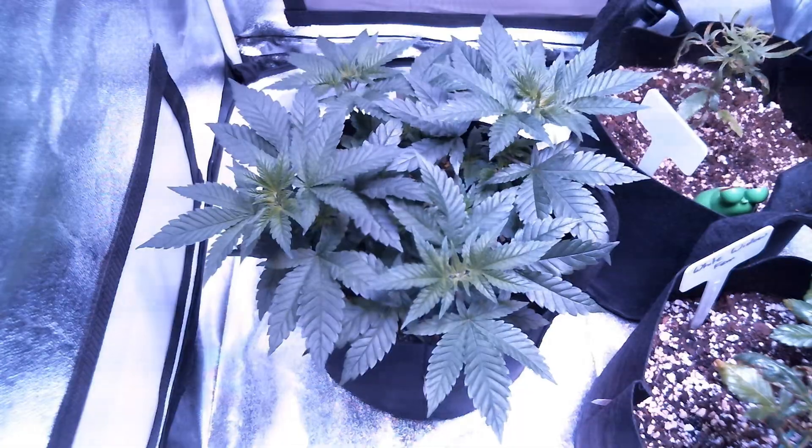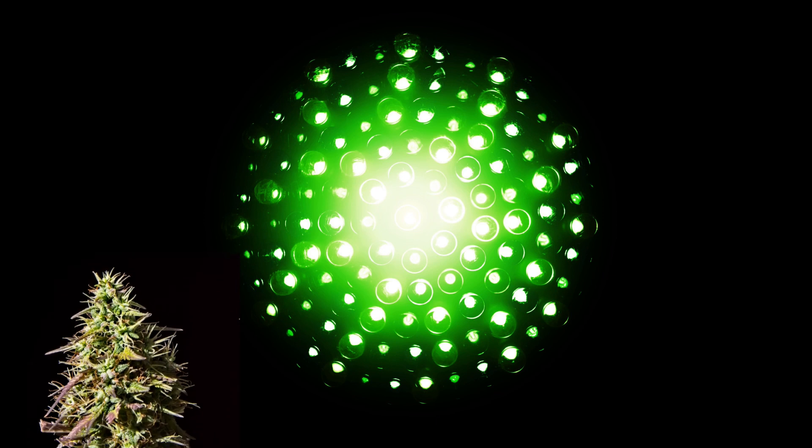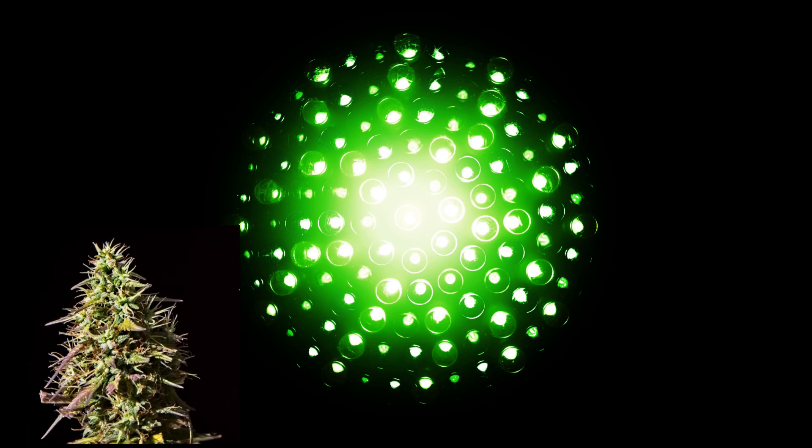There is a way to mitigate this risk though, and that's by utilizing a faint green light. Plants are able to absorb red and blue light wavelengths, but they reflect green light wavelengths, which is also the reason why plants appear green to us.